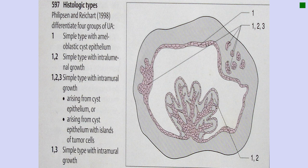Under unicystic ameloblastoma, there are three histological types. Type 1 is the simple type: you have a cystic space with a simple lining composed of ameloblast-like cells. Type 2 is the intraluminal type: the same simple lining, but the epithelium is growing inside the lumen of the cyst. In this diagrammatic representation, 1 represents simple epithelium and 1+2 represents simple type plus intraluminal growth.